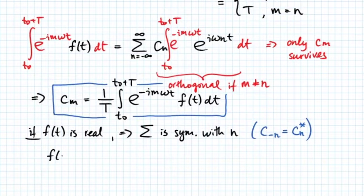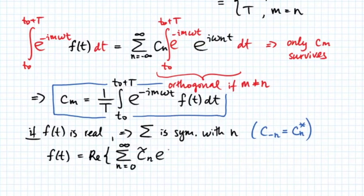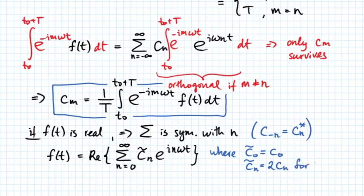Thus, we can write f of t as a real part of the series. This is taken from n equals zero all the way to infinity. Coefficient C sub n tilde, e raised to power of i n omega t, where our C tilde sub zero will be just C sub zero in terms of the previous definition, and C sub n tilde will be given as twice C sub n for all n greater than zero.